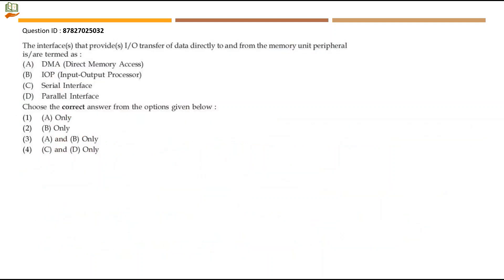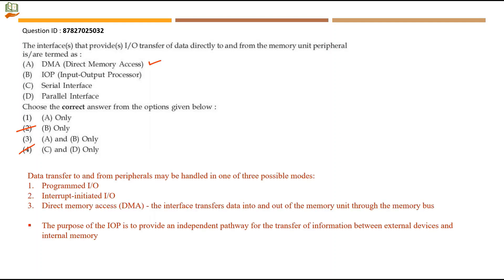Next question: the interface that provides I/O transfer of data directly to and from the memory unit is termed as? DMA transfers data into and out of the memory unit through the memory bus. IOP, the Input-Output Processor, provides an independent pathway for transfer of information between external devices and internal memory. So both DMA and IOP qualify. Option A and B only is option 3, which is the right answer.